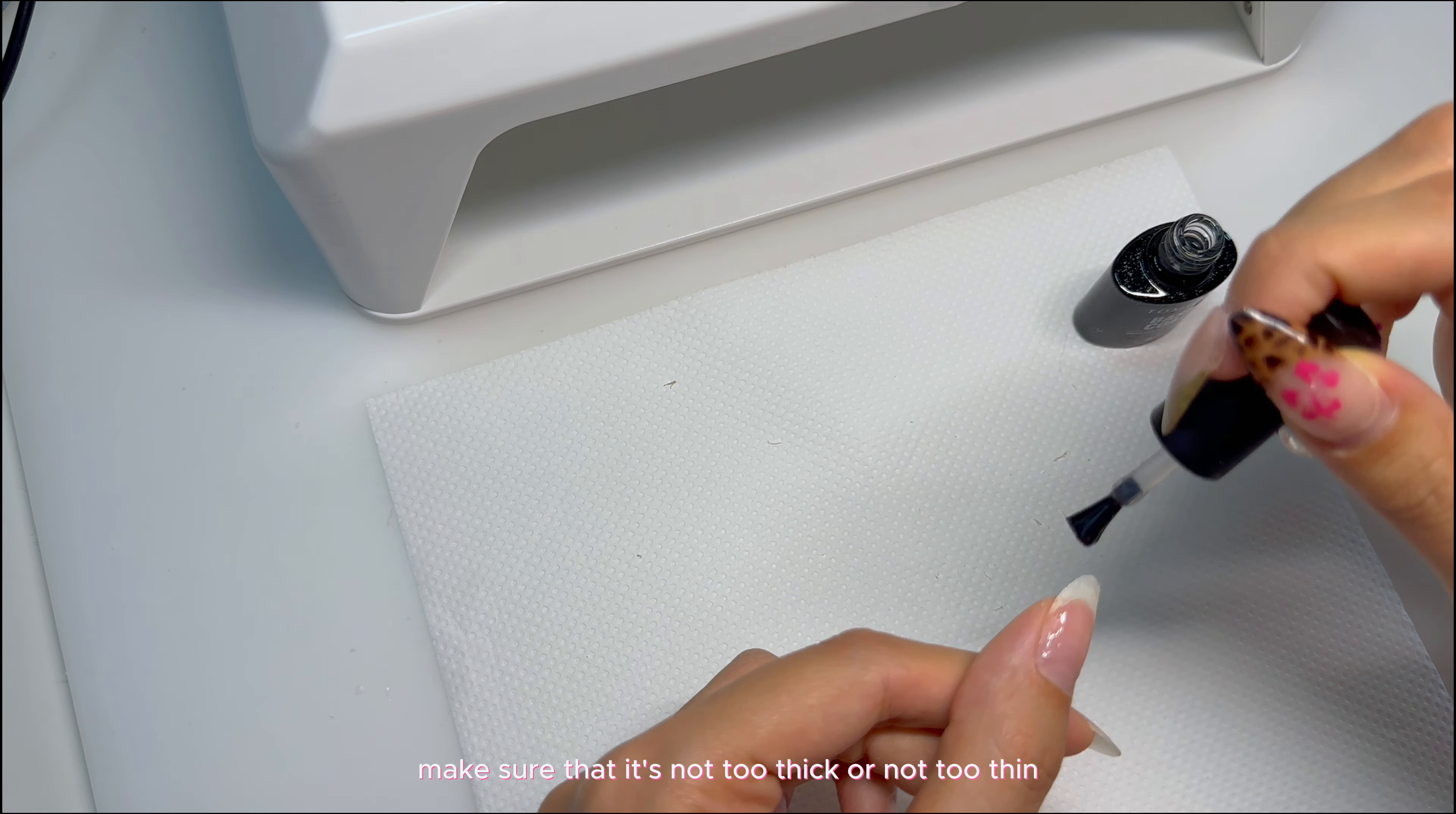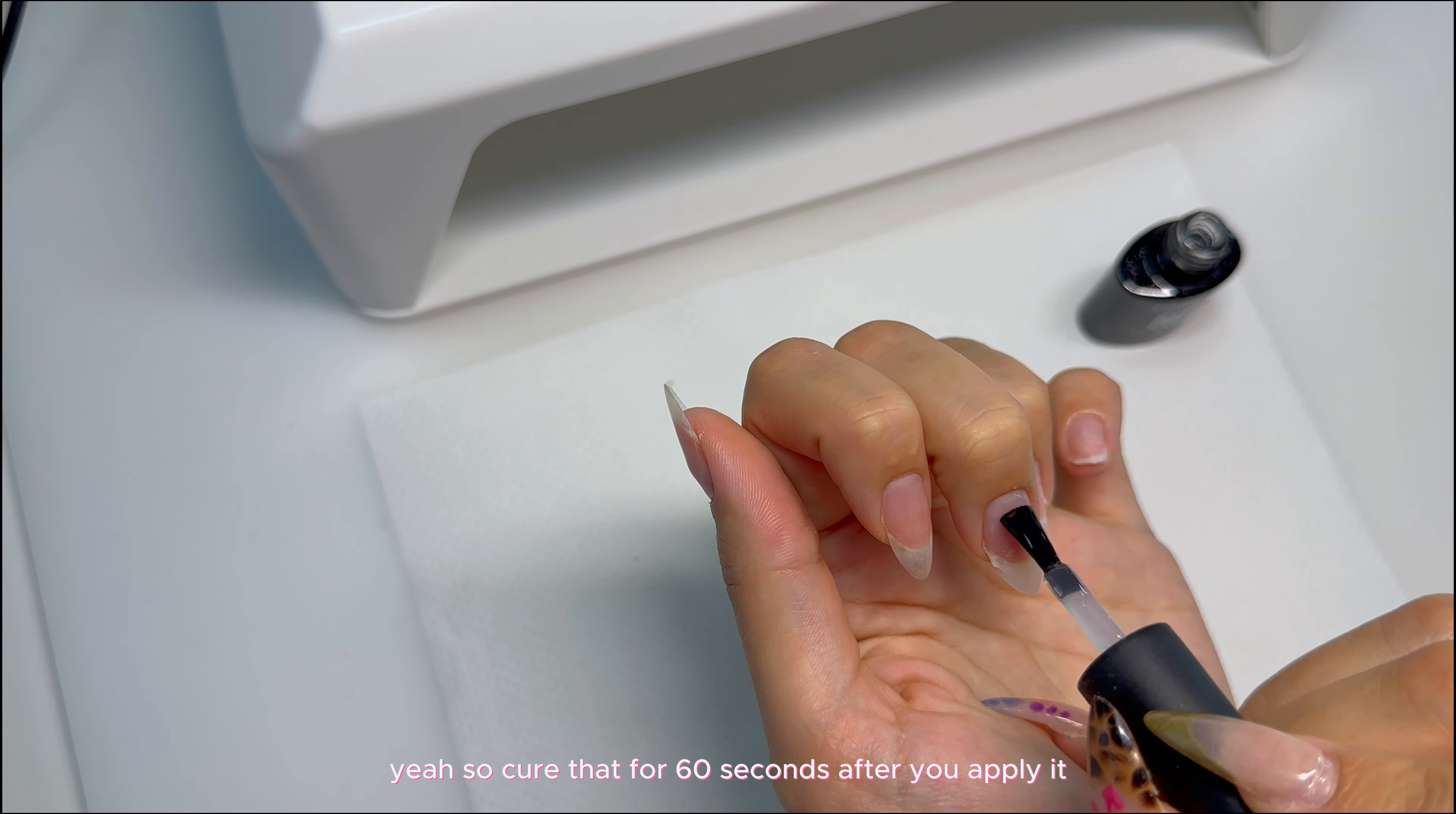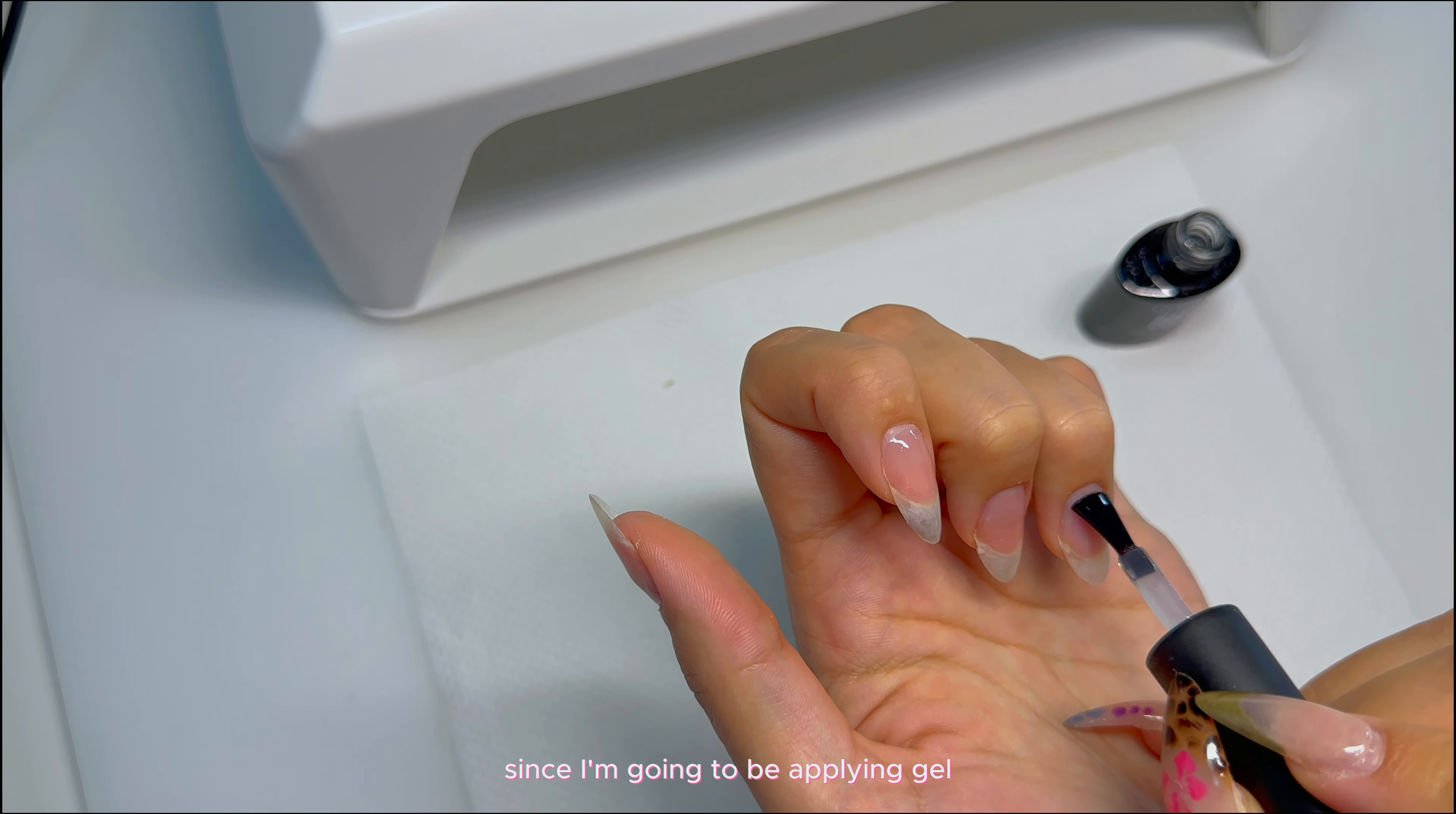After the dehydrator, I'm going in with some base coat and applying a thin layer on all of my nails. Make sure that it's not too thick or not too thin, but it's covering the whole nail. So cure that for 60 seconds after you apply it.